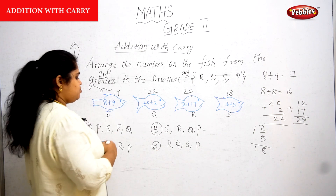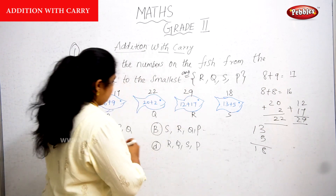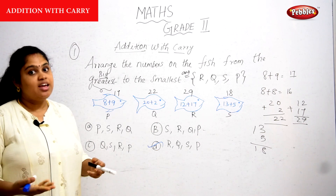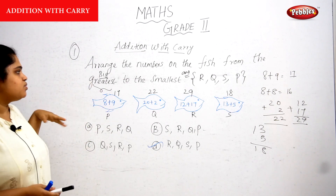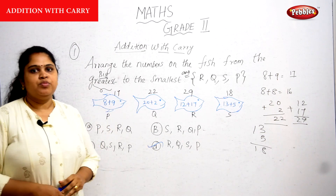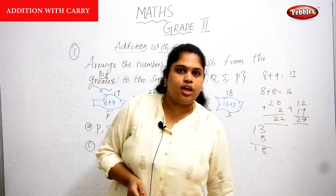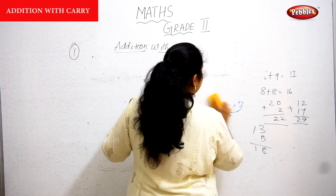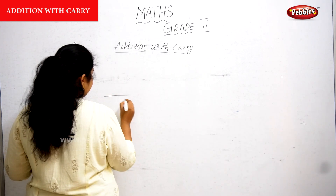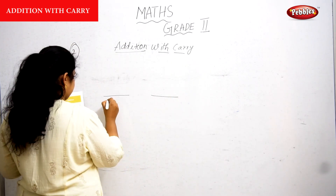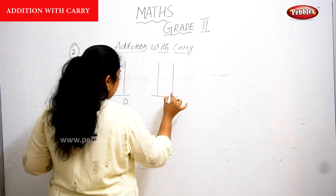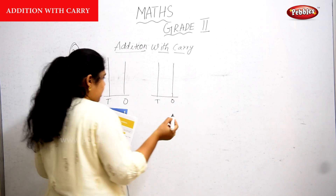Option D is the correct answer. Now we know how to perform addition and also how to arrange in descending order from big to small. For the second question, we are going to draw some abacuses and perform addition using beads.